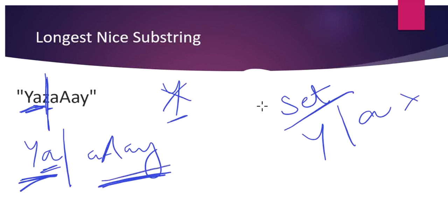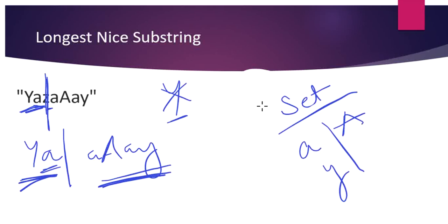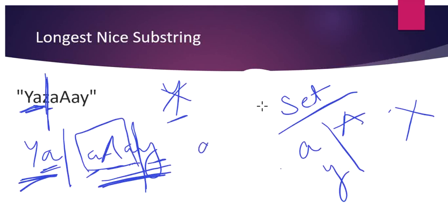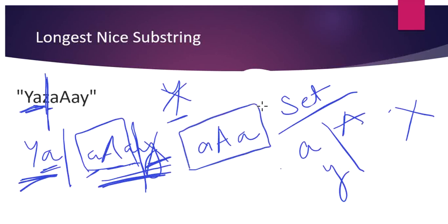For the left part 'yA', the set contains capital 'Y' and small 'a'. We check capital 'Y' — its corresponding small 'y' is not present, so this part cannot form a nice substring and we ignore it. For the right part 'aAaay', the set contains small 'a', capital 'A', and small 'y'. Small 'a' has capital 'A' present, capital 'A' has small 'a' present, but small 'y' has no capital 'Y', so we split again at 'y', finding 'aAa' as the longest nice substring found so far.